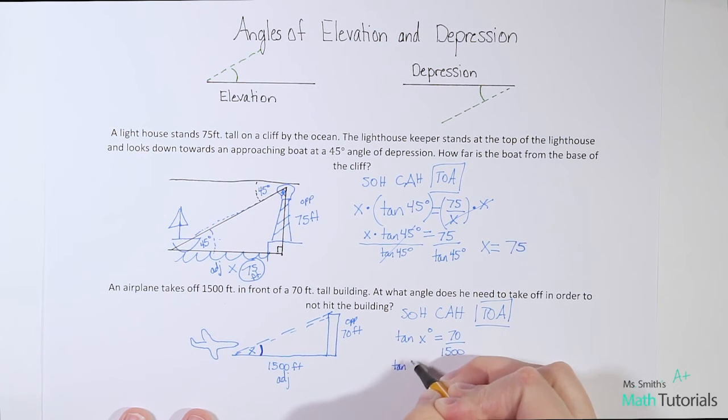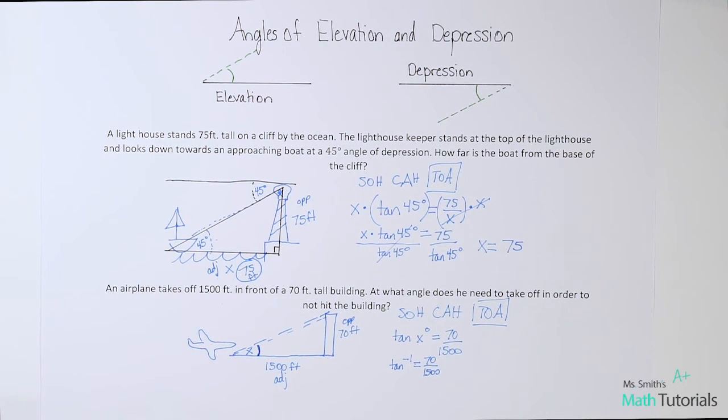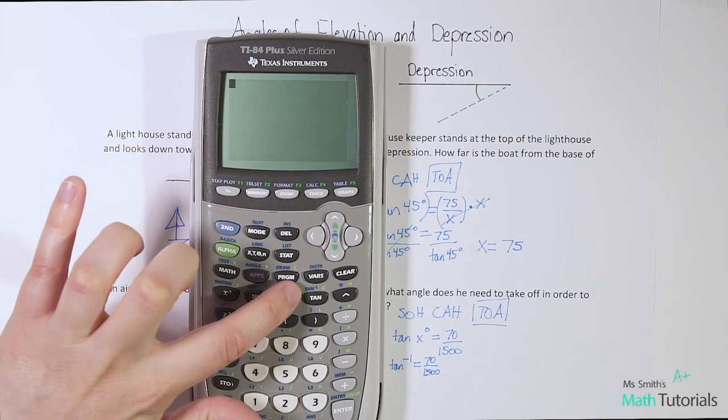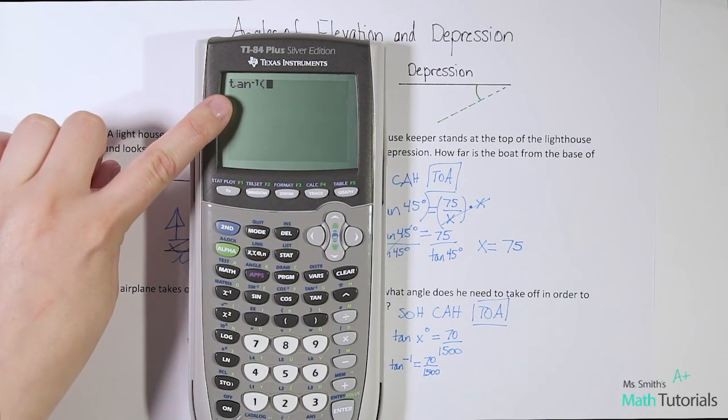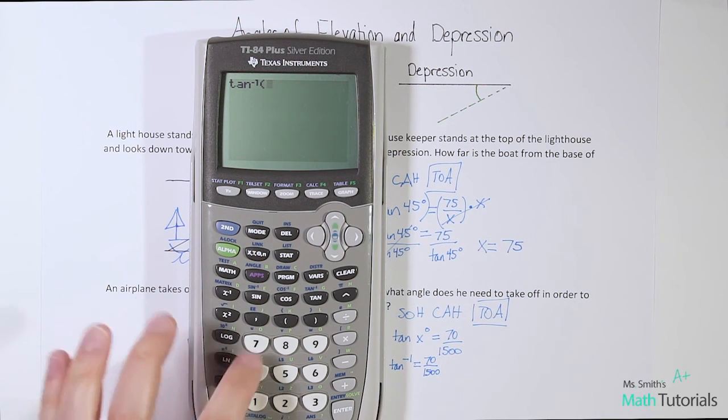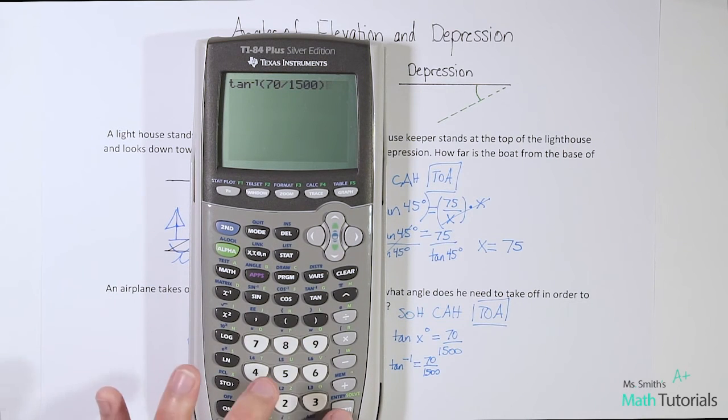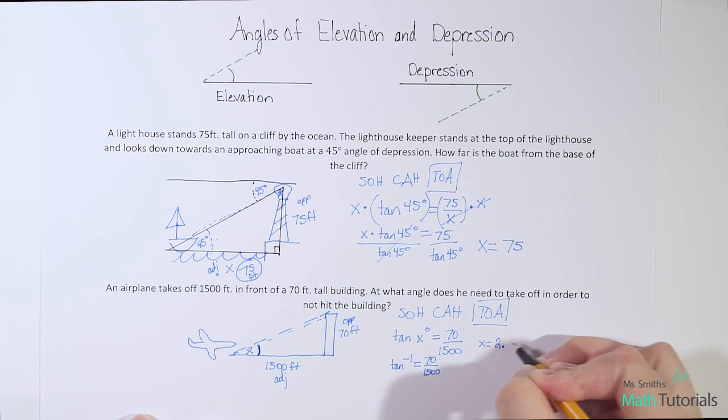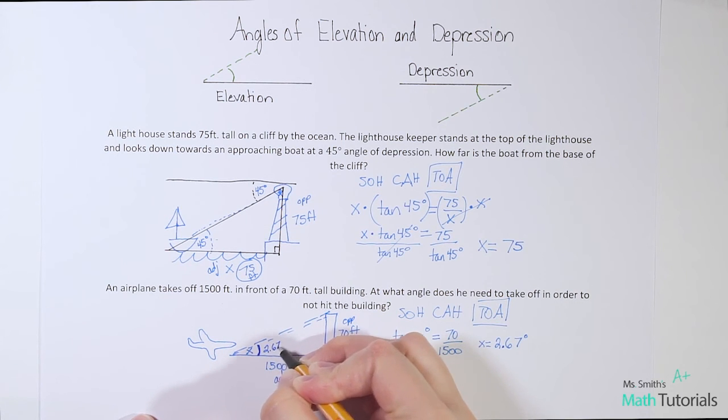I know the angle is what's missing, and when that is missing, we need to do inverse tan. We show inverse by doing that negative one equals 70 over 1500. Once you get to this point, it's real easy. Grab out your calculator, make sure you're in degree mode. We just need that tan negative one right above the tan button. Hit second tan, and in parentheses, you just put 70 divided by 1500. You get 2.67 degrees. So he needs to make sure that when he lifts off, he's going at least at an angle of 2.67 degrees.